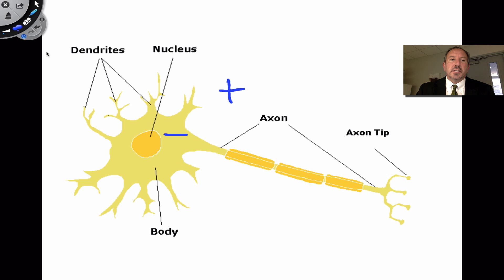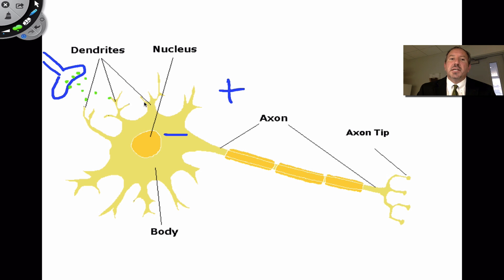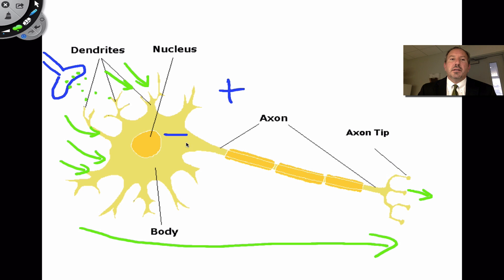So when a nerve impulse comes — say this is the axon of another neuron — what actually happens is this neuron doesn't actually touch the other neuron. Where they come together is a space called the synapse. What happens is these little chemicals in vesicles bud off from the axon, travel across the synapse, and are received by the dendrite. So incoming messages in a neuron are received by the dendrite, and outgoing messages go via the axon. The overall nerve impulse flows: dendrite → cell body → axon → synapse → dendrite → cell body → axon.